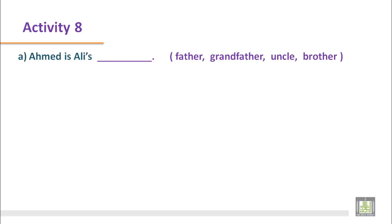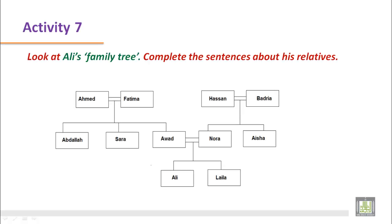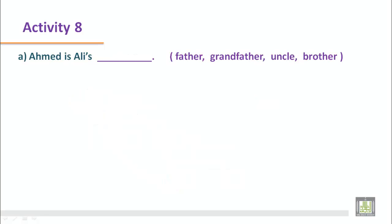Let's have a look at sentence A: Ahmed is Ali's ___. Look at Ali's family tree very carefully. From this family tree, we can find Ahmed and Ali. Awad is Ali's father, and Ahmed is Awad's father. So the relationship between Ahmed and Ali is grandfather and grandson. The answer: Ahmed is Ali's grandfather.